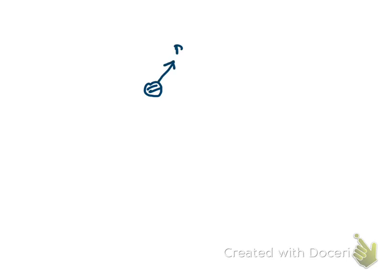Assume that we have an object moving with linear momentum P, and we want to calculate the angular momentum of this object about a reference point O. We have the position vector of the object with respect to the reference point O. We define the angular momentum as equal to the cross product — the vector product — of the position vector and the linear momentum.